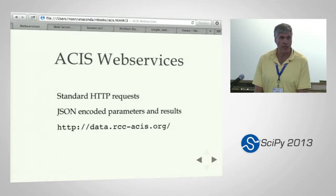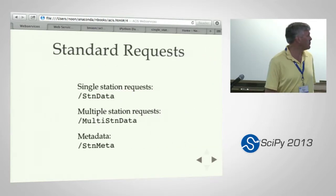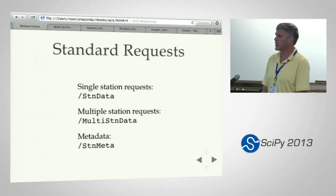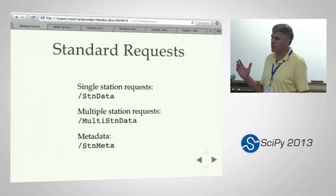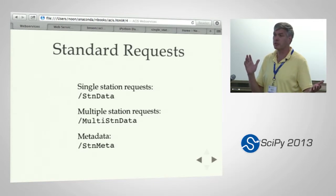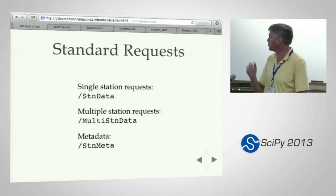It's available at data.rcc-acis.org — that's the URL for the documentation and also the base URL for the methods you can make requests on. We have three standard basic request types. Station data returns a time series for a single station. Multi-station data returns a group of stations that are either in a bounding box, a state, a county, a climate division, or a hydro basin — and it returns not only a single time slice but a time series for each station meeting your criteria.